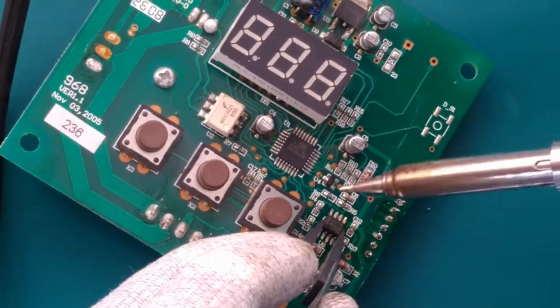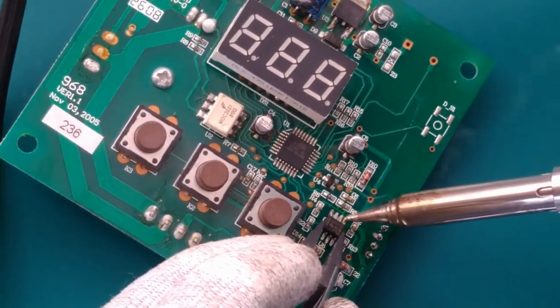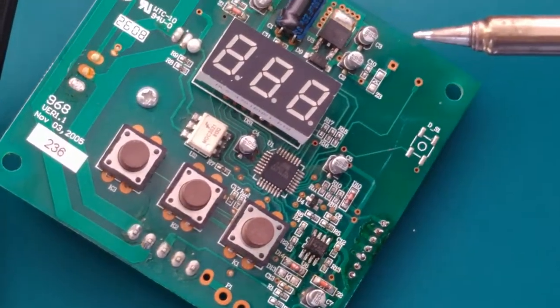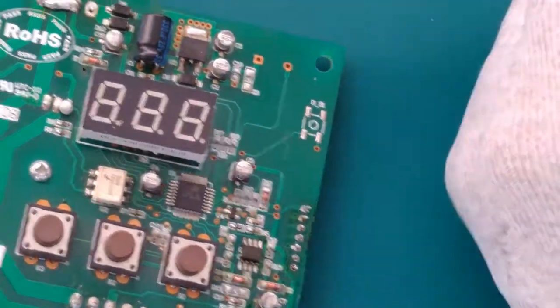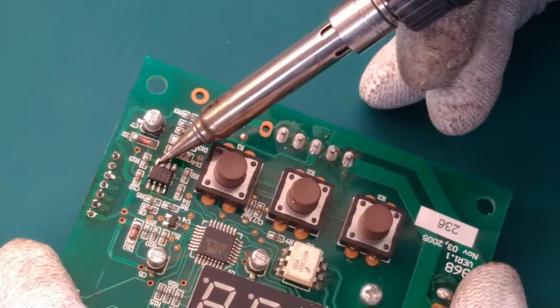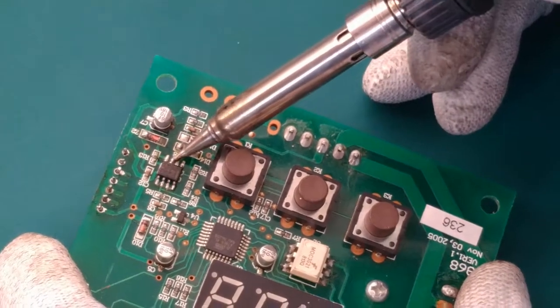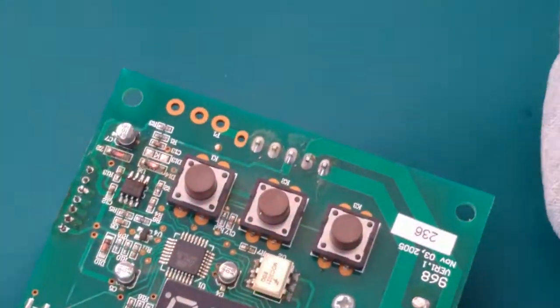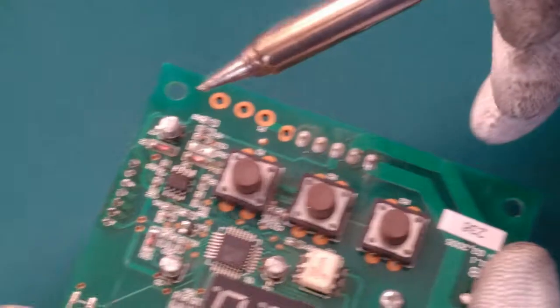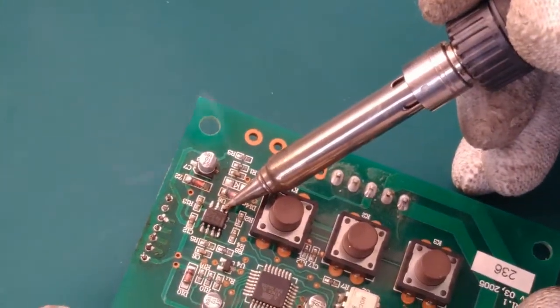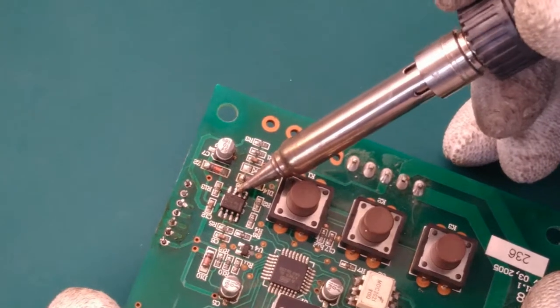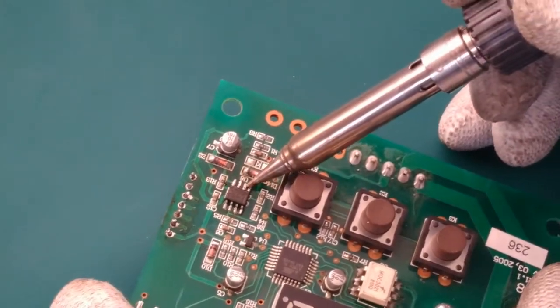Now the component is aligned along with the track of the PCB and one track is being soldered. The leads are being soldered one by one. We have successfully soldered this small chip component to the PCB.